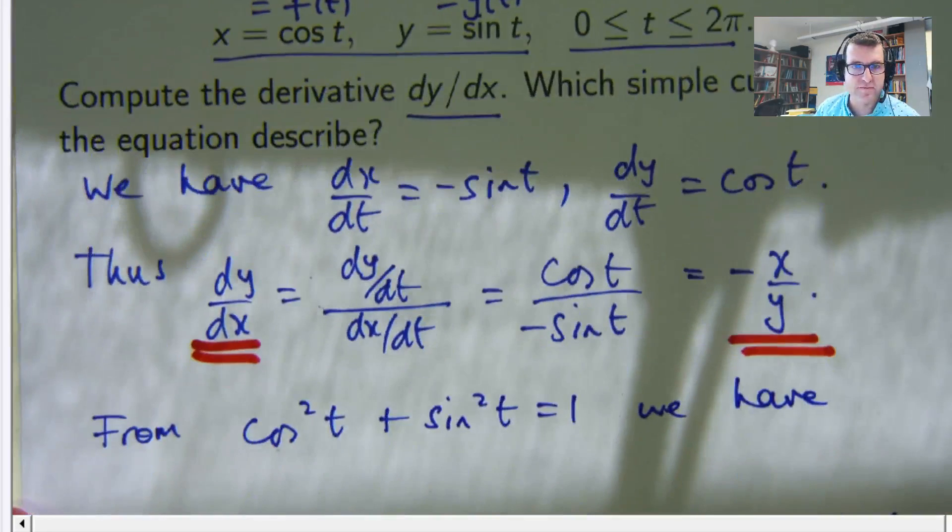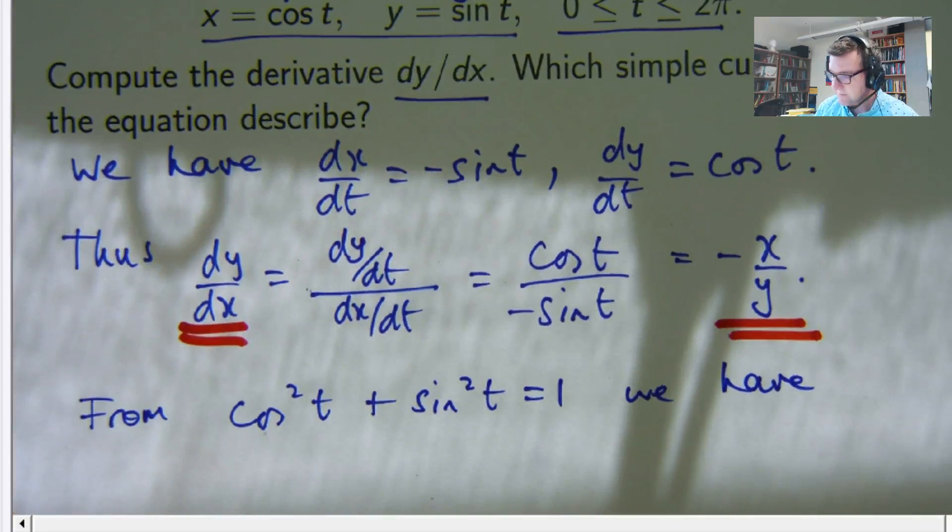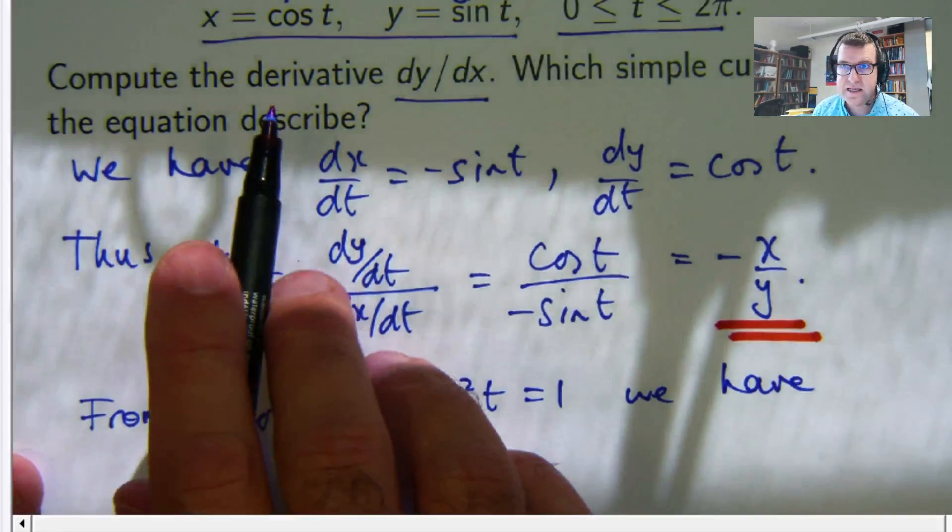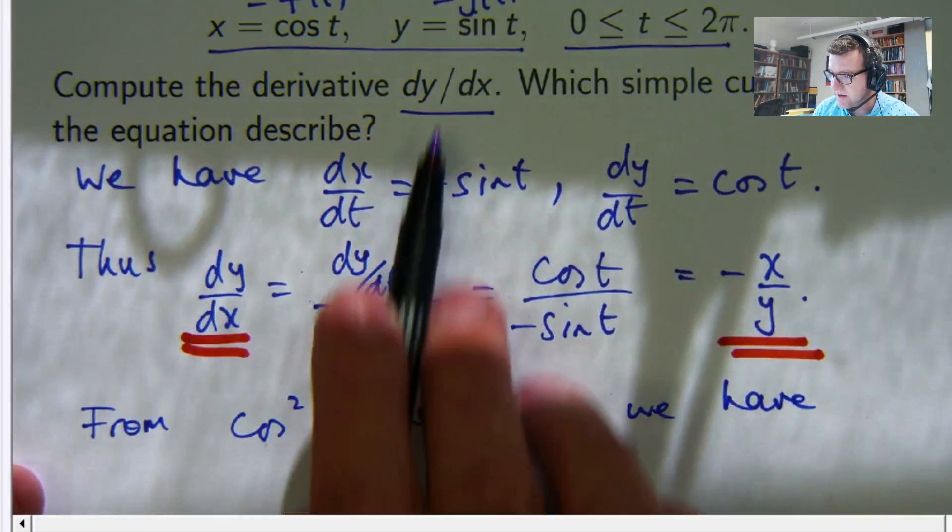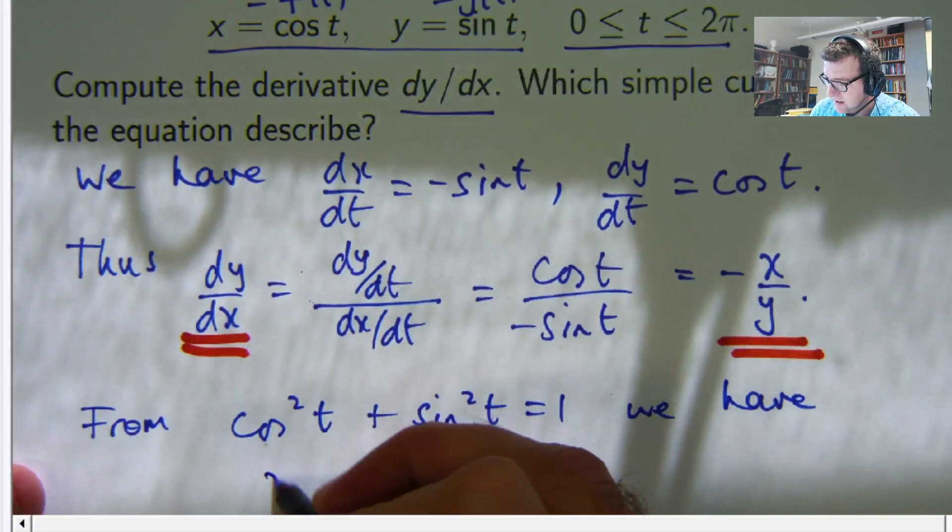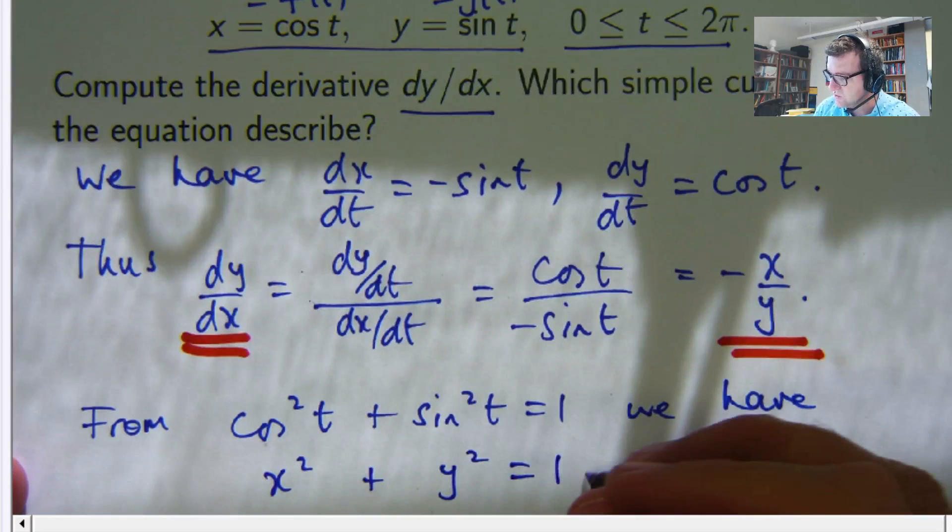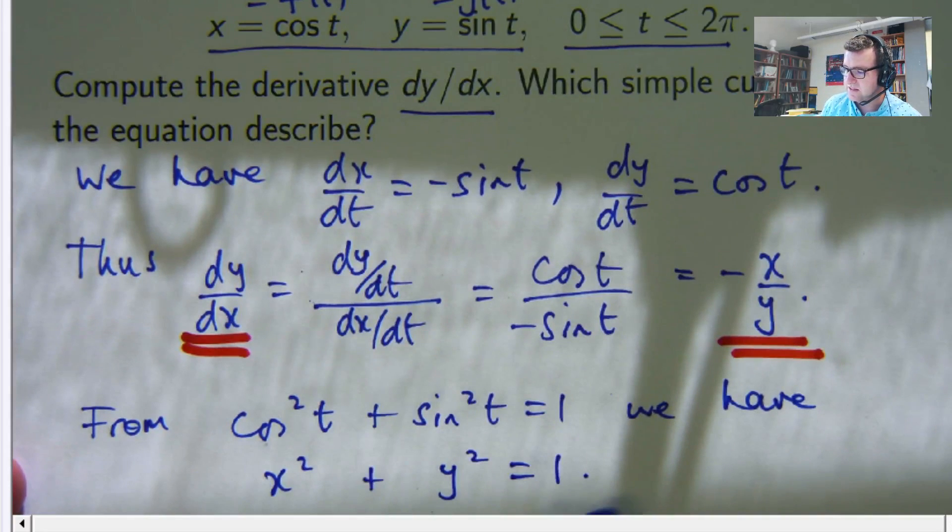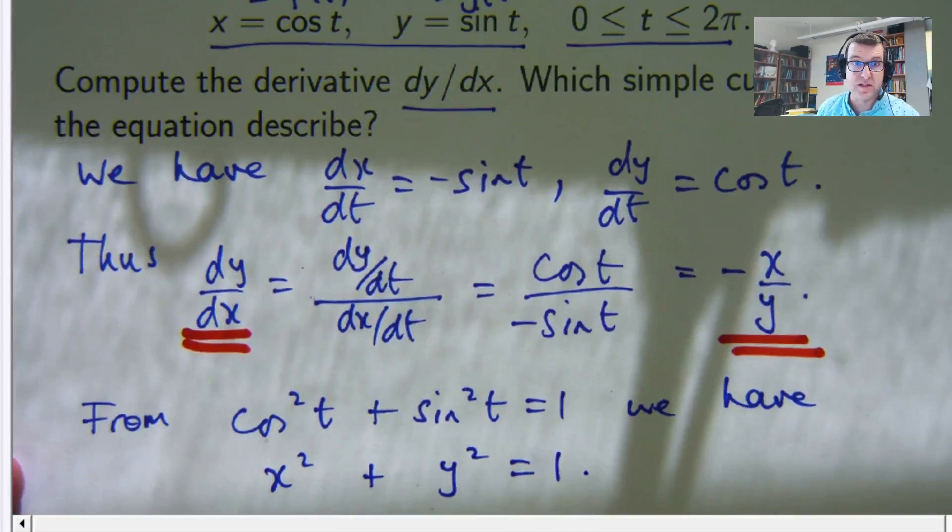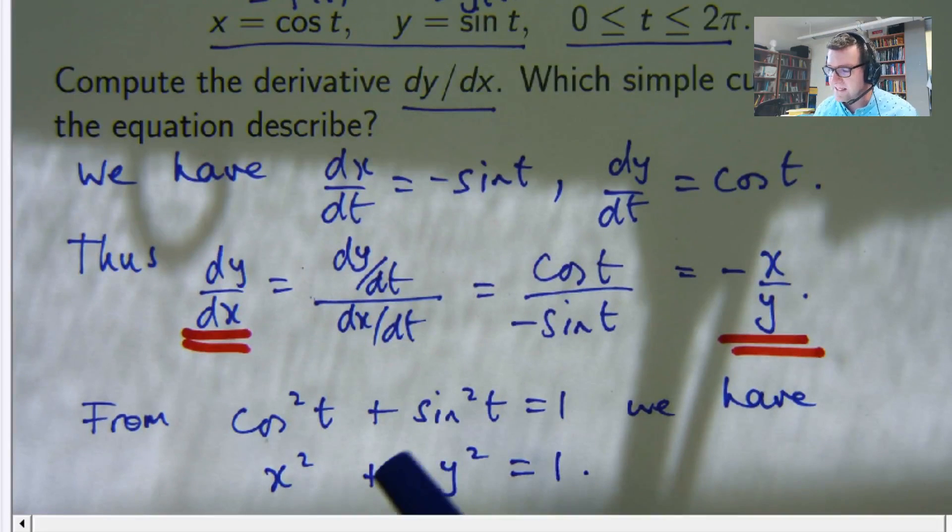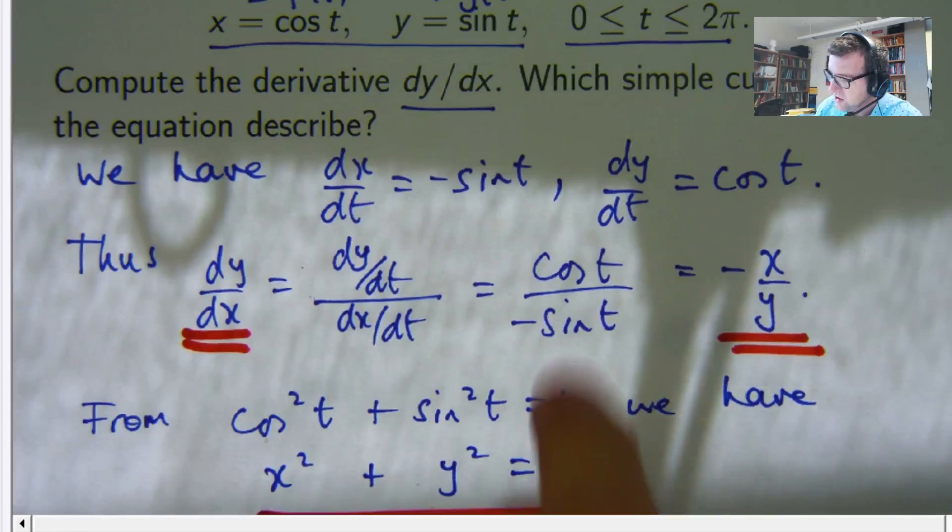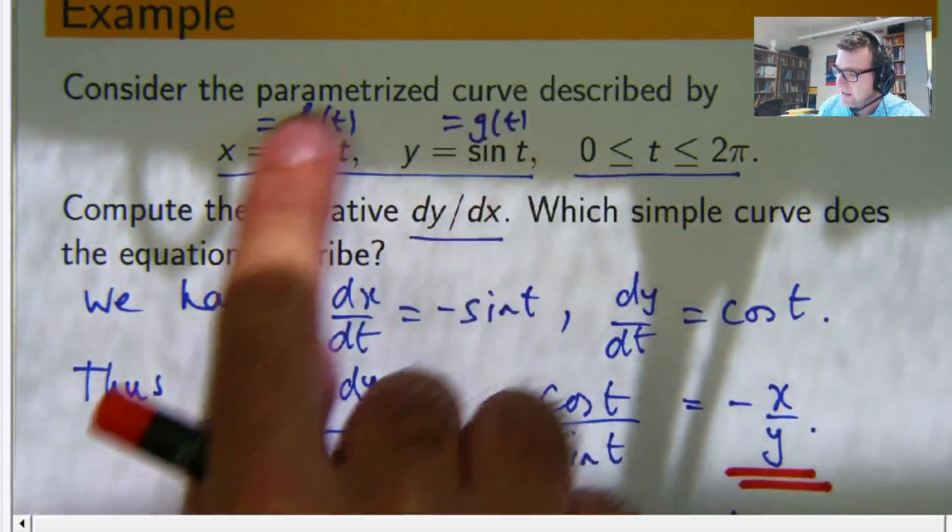So from cosine squared t plus sine squared t equals one, we have x squared plus y squared equals one.